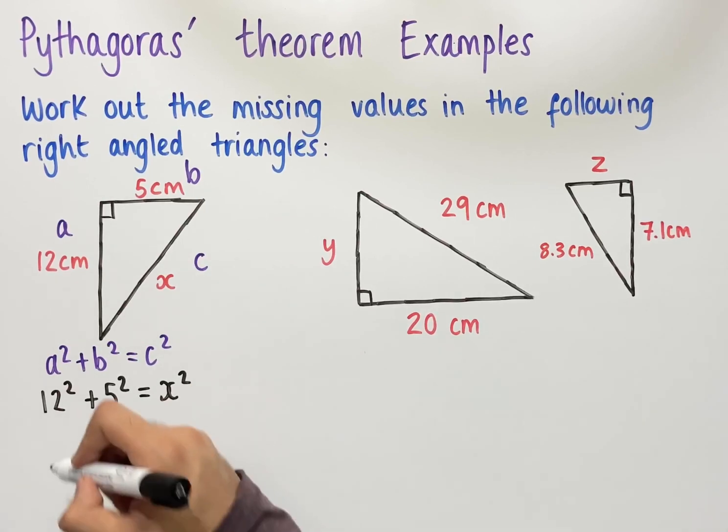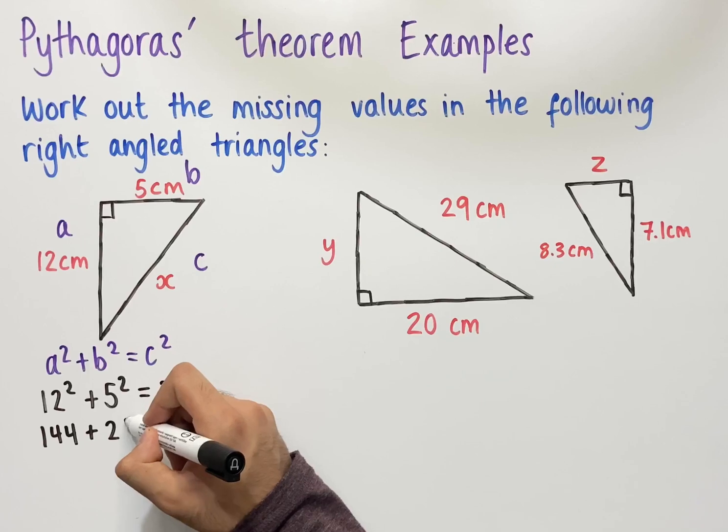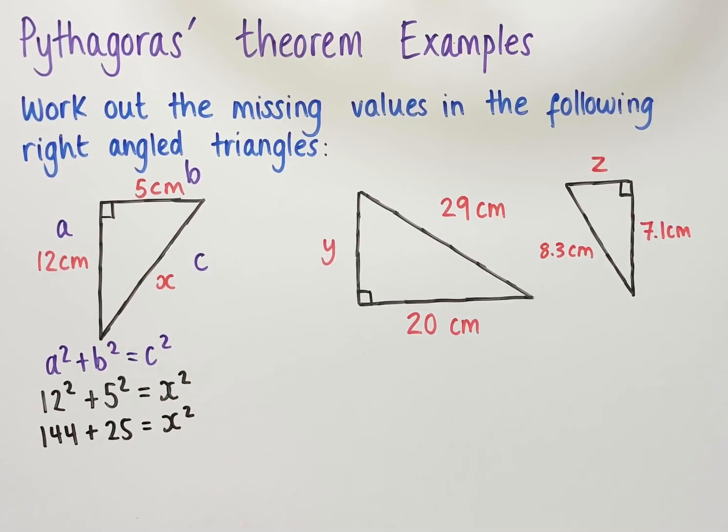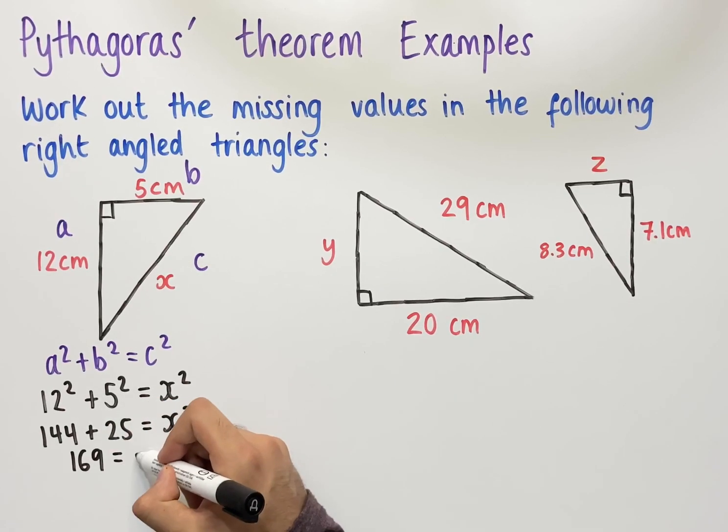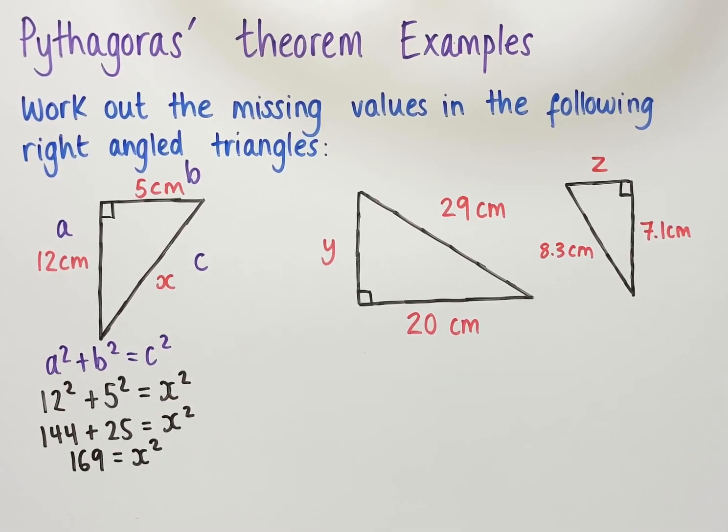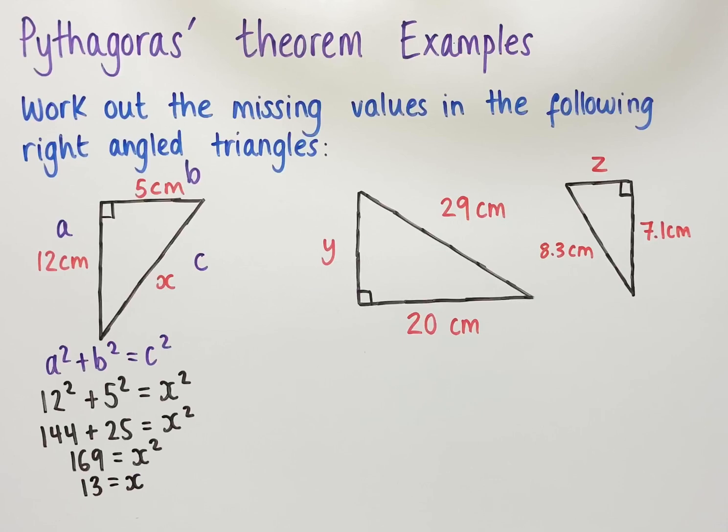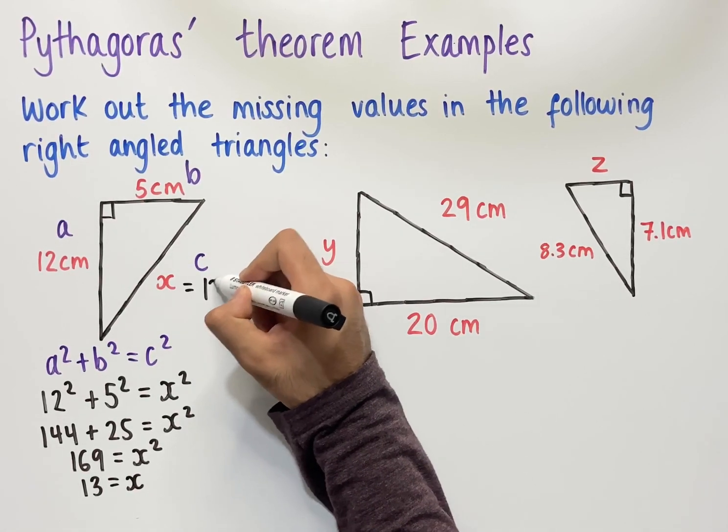12 squared is equal to 144, 5 squared is equal to 25, and that equals x squared. Adding these two values together, we get 169 equals x squared. And then finally, taking the square root of both sides, we end up with 13, which equals x. Therefore, as a measurement, x is equal to 13 centimetres.